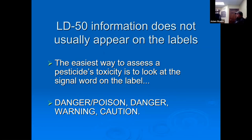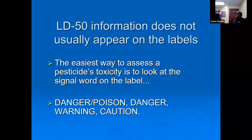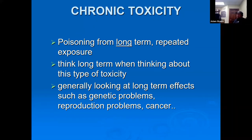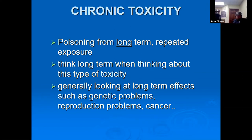The LD50 doesn't usually appear on the label — it's found in the Material Safety Data Sheet (MSDS), which you can find online. The best way to judge toxicity is to look for the signal words on the label. Chronic toxicity is a more long-term exposure issue — for example, if you've been applying the same product over years and it's been getting on your skin or you've been inhaling it, developing a problem 10 years later. We're seeing that with glyphosate lawsuits now.